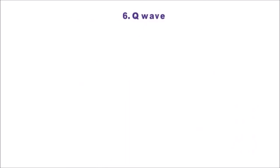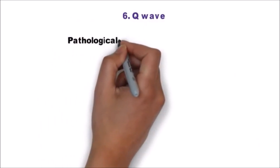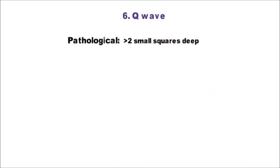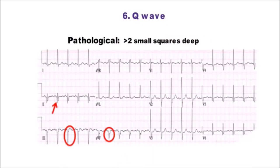Step 6 is q-wave. It is called pathological if more than 2 small squares deep and usually indicates current or past MI. As you can see deep q-waves in inferior leads 2, 3 and AVF. So this is ECG of old inferior wall MI.